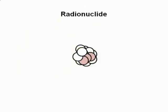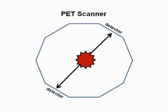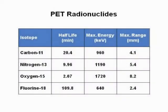Positron emission tomography, or PET, is a non-invasive imaging technique that relies on radiotracers, which emit positrons from radionuclides that are incorporated into biologically active molecules. An emitted positron annihilates with an electron to produce two gamma rays traveling in opposite directions, which are detected by the PET scanner. Fluorine-18 is the most common radionuclide used in PET, due to its relatively long half-life of 110 minutes.